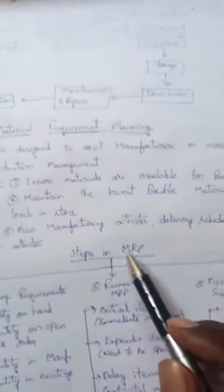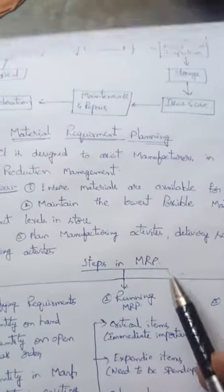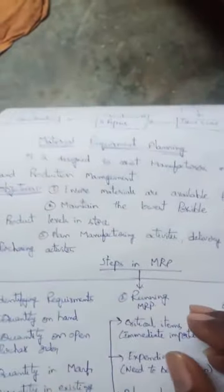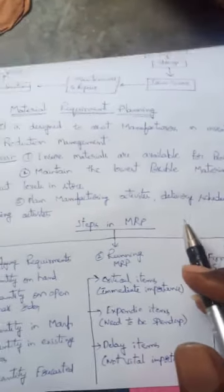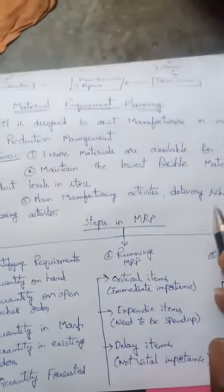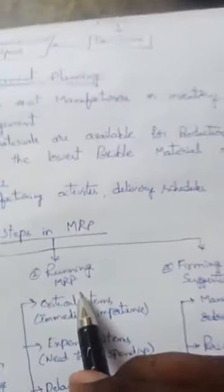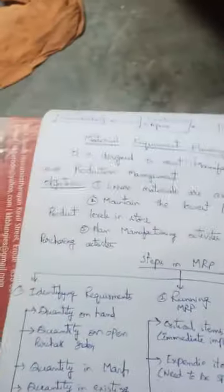The third objective is manufacturing activities and delivering the product on schedule in purchasing activities — maintaining good, efficient manufacturing activities and delivery schedules; they have to manufacture whatever products are required within time. There are some particular steps in materials requirement planning, classified into three steps: first, identify requirements; second, running MRP (Material Requirement Planning); and third, forming the order suggestions.